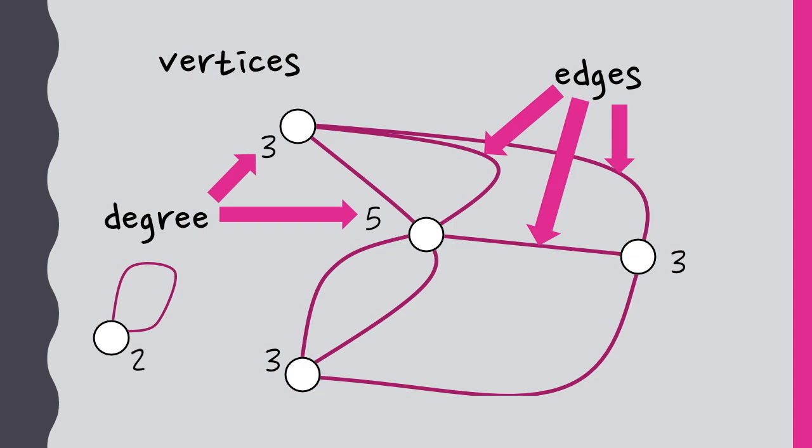We can also count faces, as long as the graph is drawn so that none of the edges cross over one another. Then, any region enclosed by edges and vertices is a face, and we also count the outside area as a face.